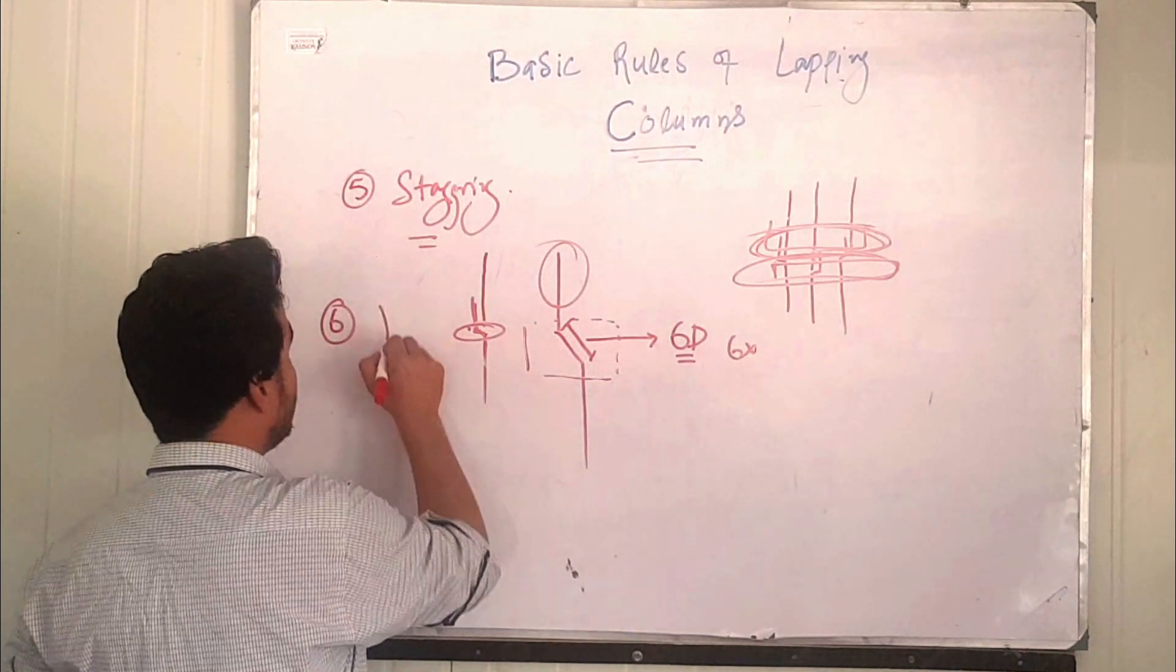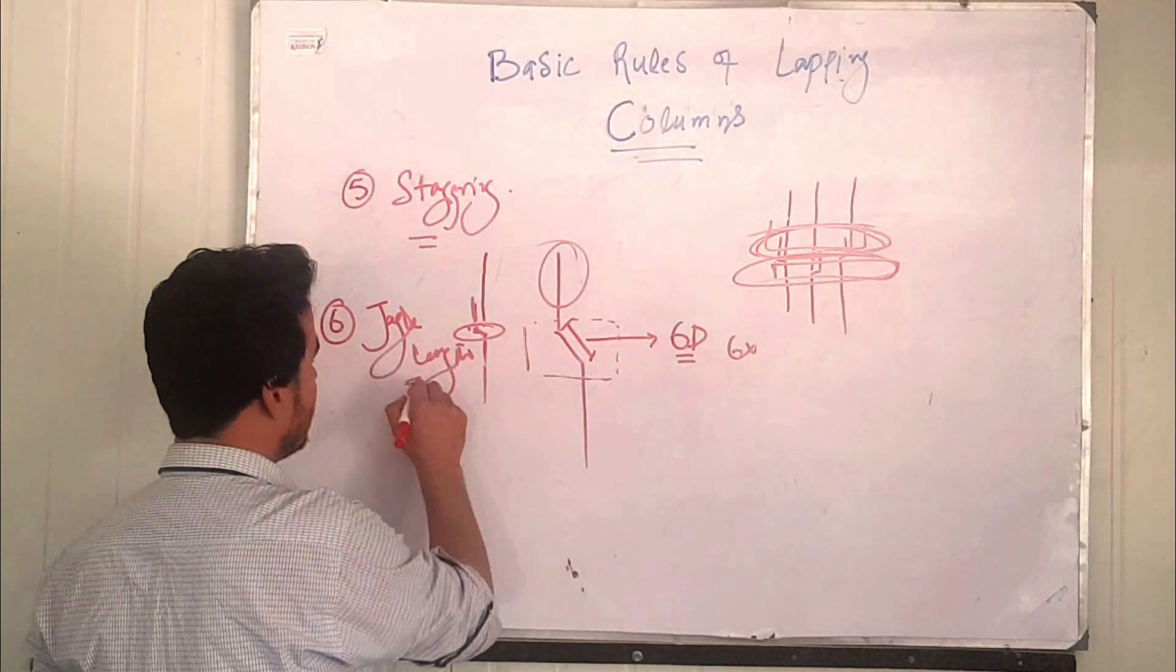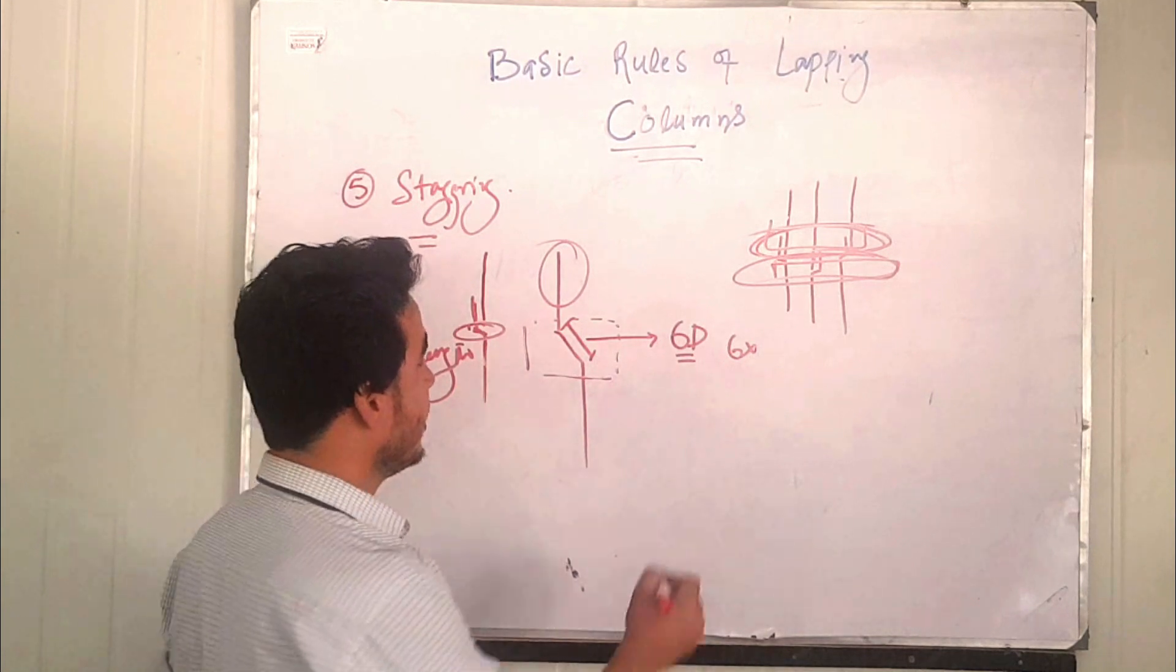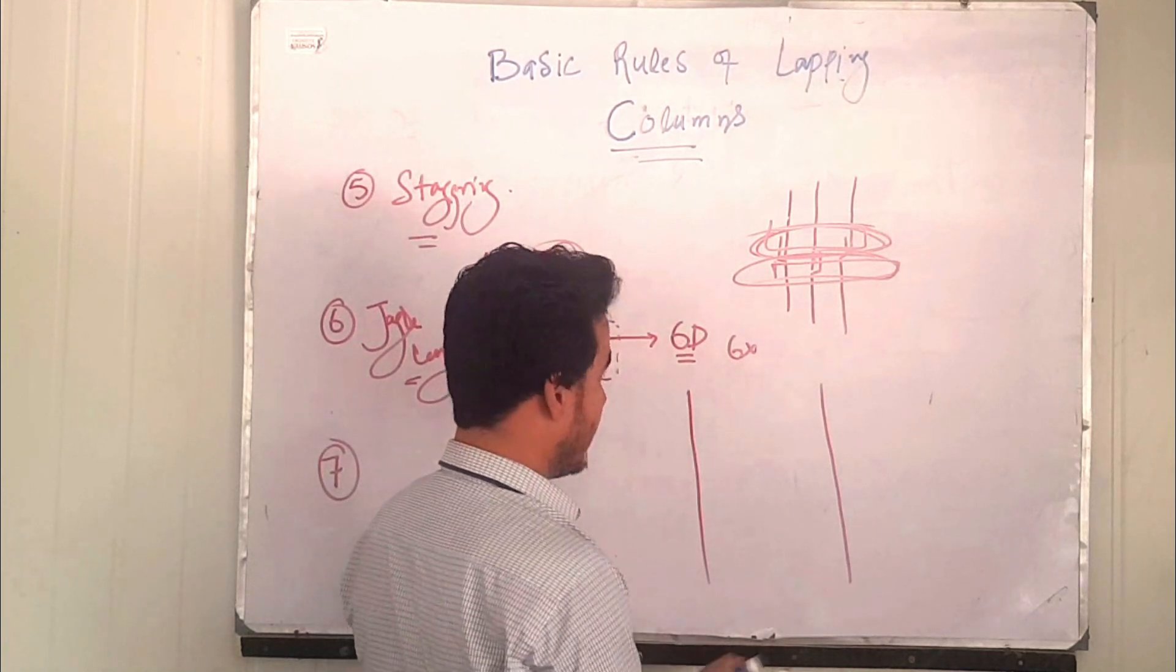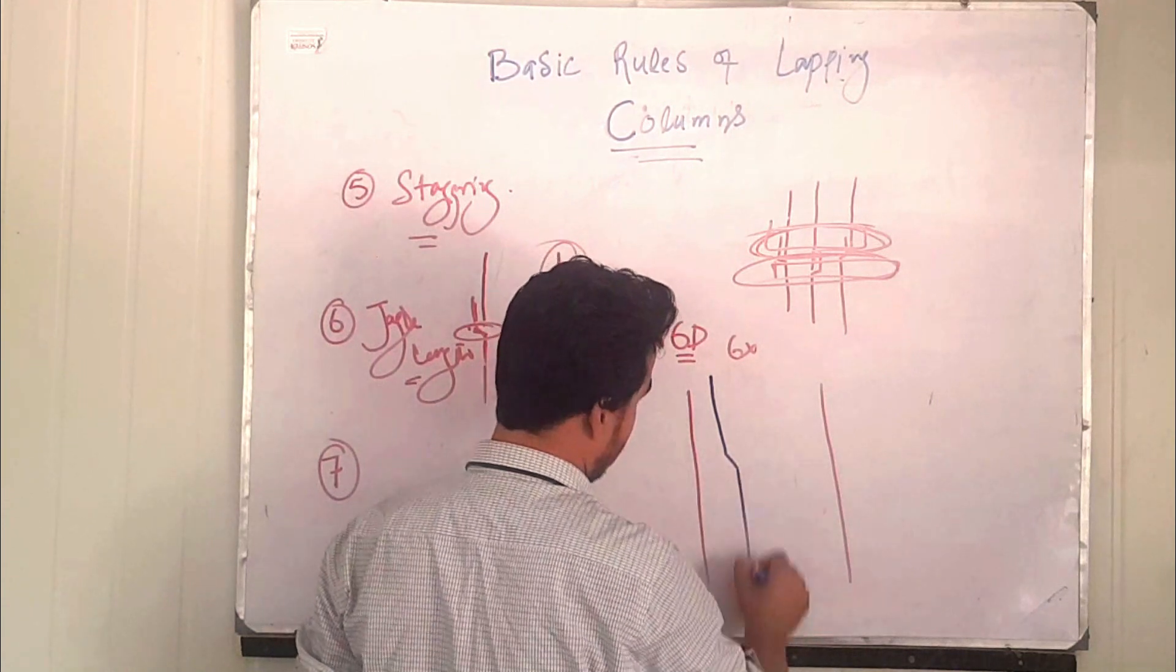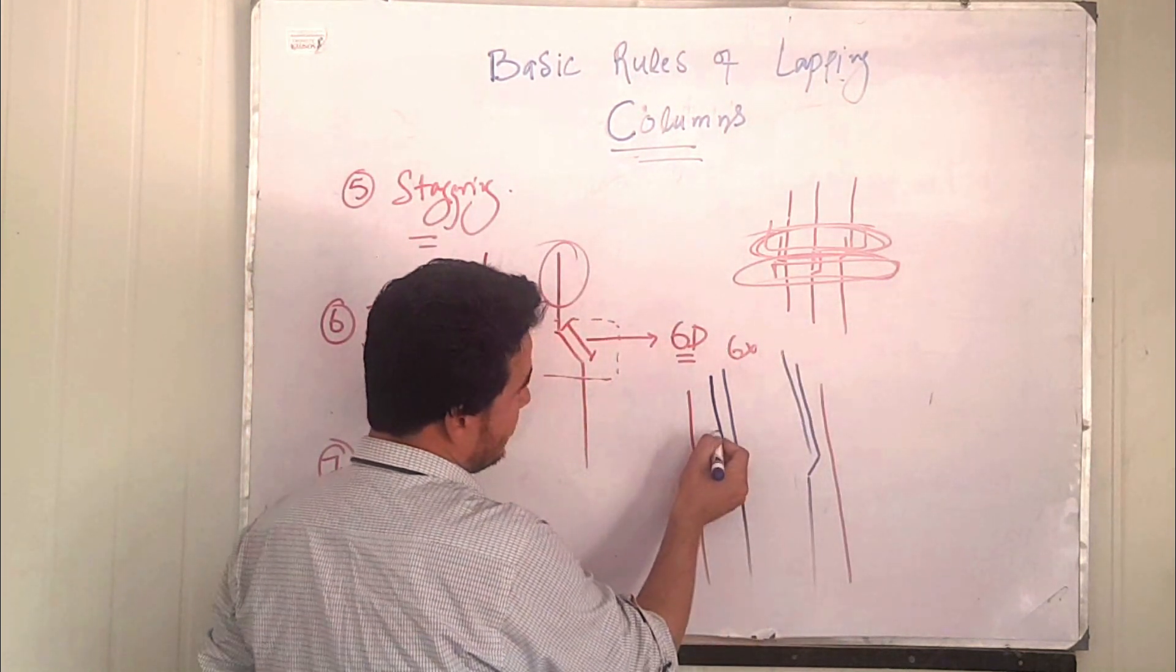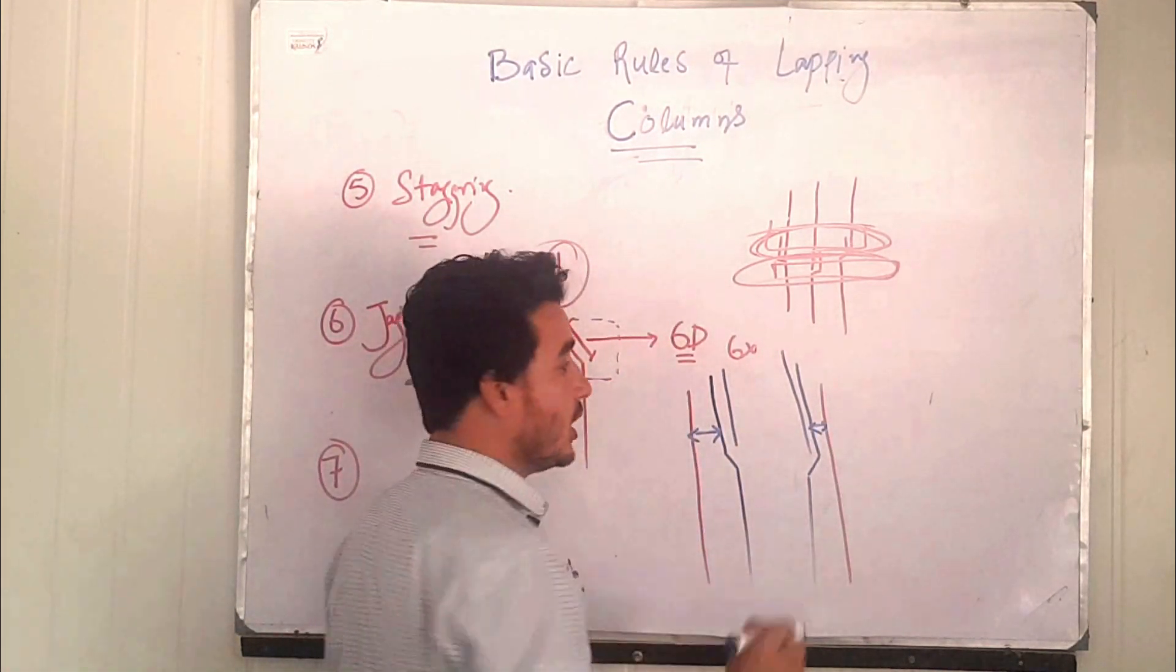Now the last one, the seventh rule, is the concrete core. The concrete core of these bars, if you are using columns, this is a column and these are the bars coming from the top. This cover and this cover shall be equal.